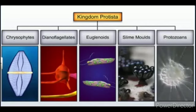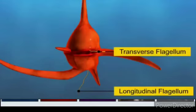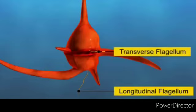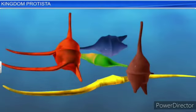The second group is dinoflagellates. 'Di' means two — two flagella are present. These organisms are mostly marine and photosynthetic: they are present in sea water and synthesize their own food. They appear in different colors — yellow, green, brown, blue, or red — depending on the main pigments present in their cells.